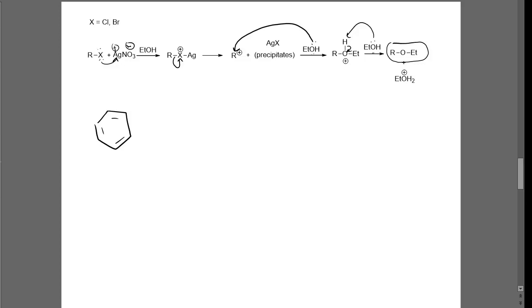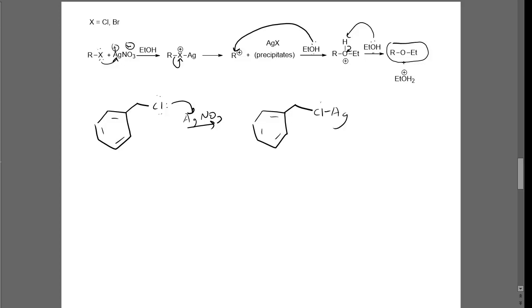Let's look at our benzyl chloride. For benzyl chloride, when we have that in solution with our silver nitrate — our AgNO3 — based on the mechanism, we've got our chlorine binding to the silver to get us to our intermediate, which is silver bound to our chlorine leaving group. Now we have a positive charge on that chlorine leaving group.